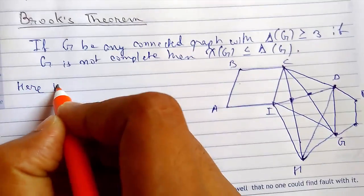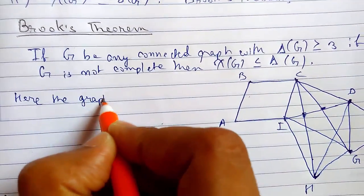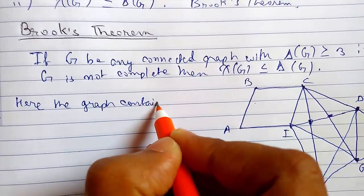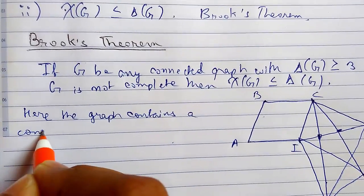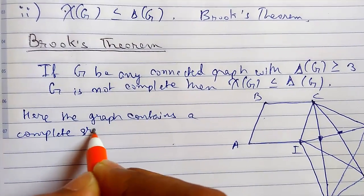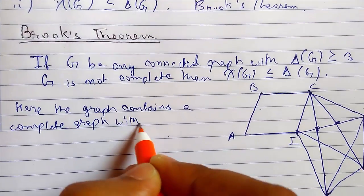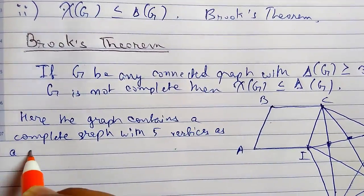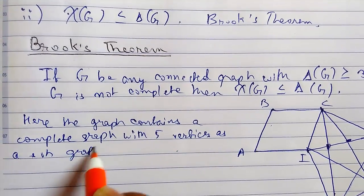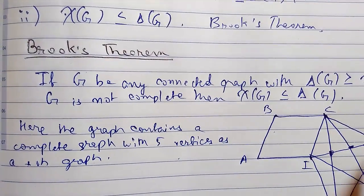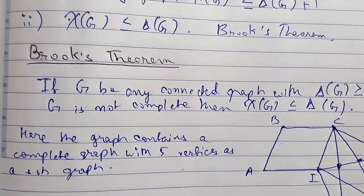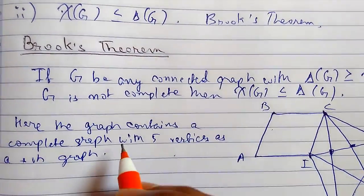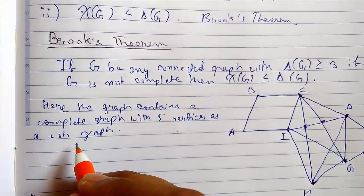Here the graph contains a complete graph with 5 vertices as a subgraph. 1, 2, 3, 4, 5. So 5 vertices occur more.